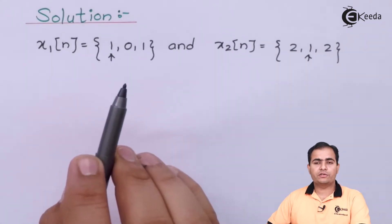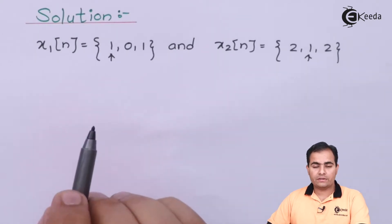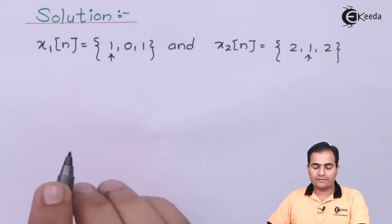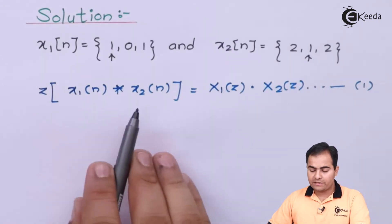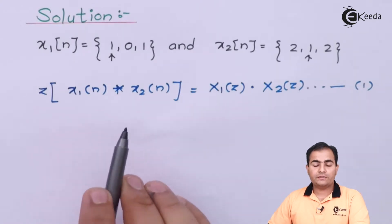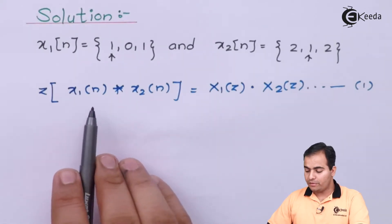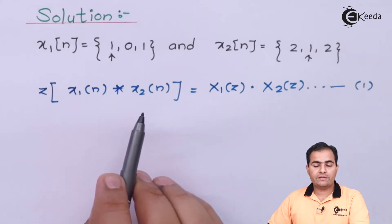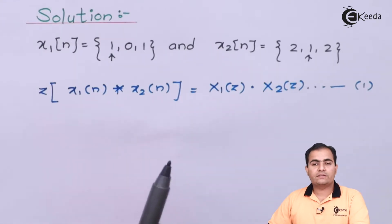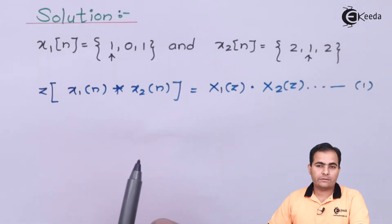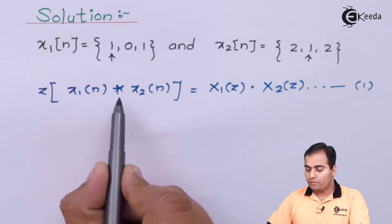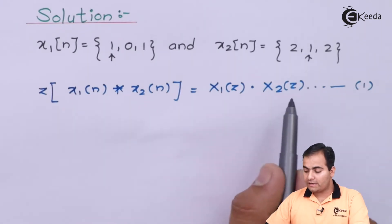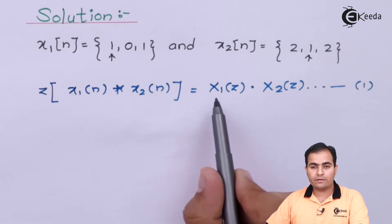We are going to find the linear convolution of these two sequences using Z transform. Before moving to convolution, you should know the property statement: the convolution of any two discrete sequences, when transformed into the Z domain, is nothing but the product of the Z transforms of the individual sequences. So first we need to find X1 of Z and X2 of Z.